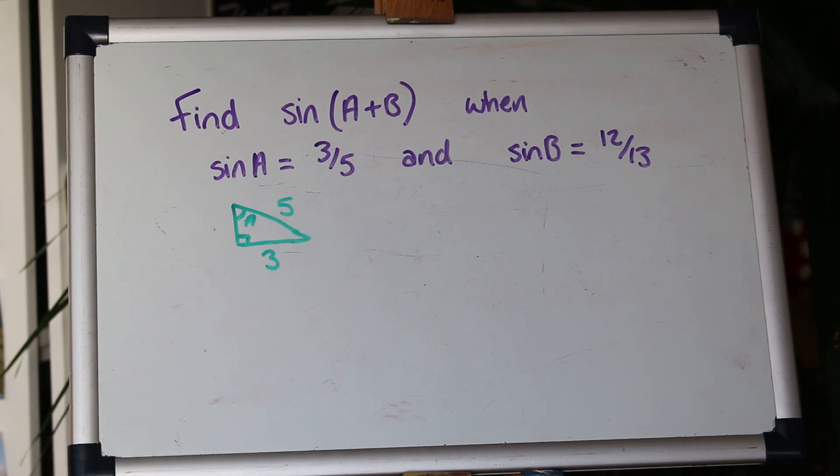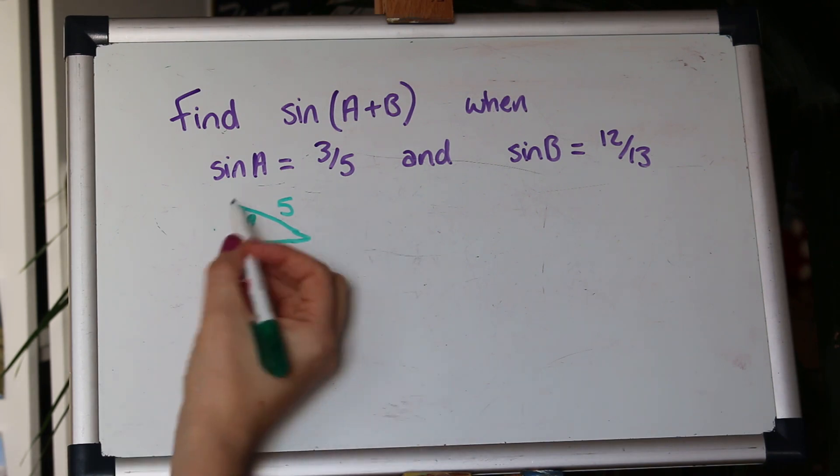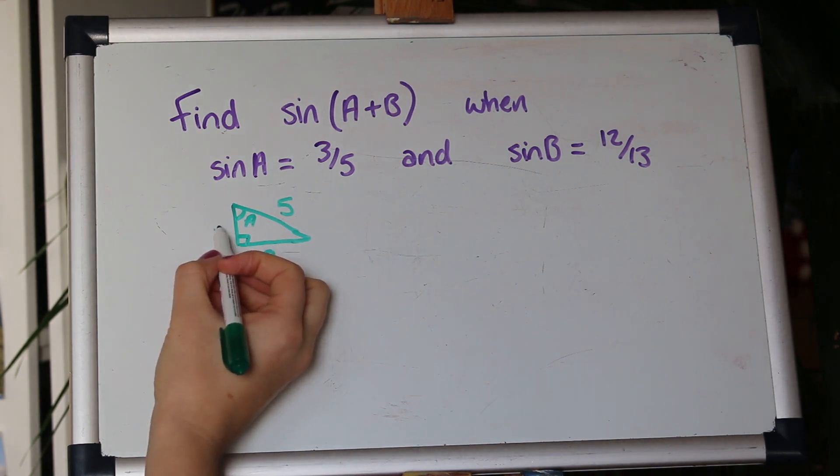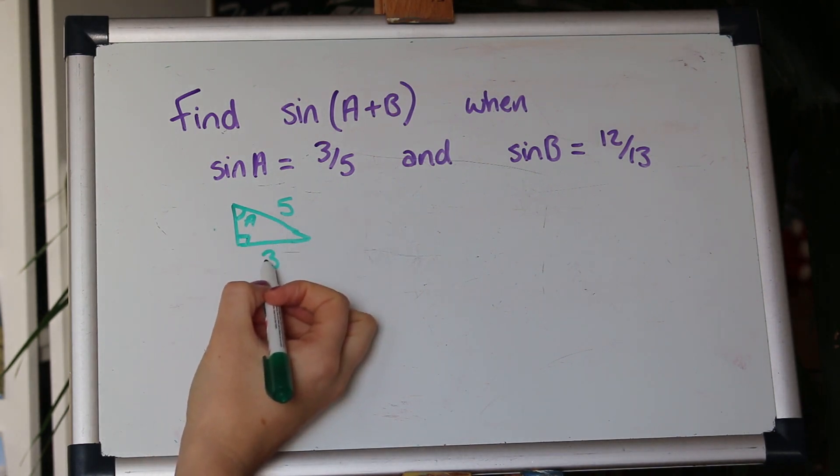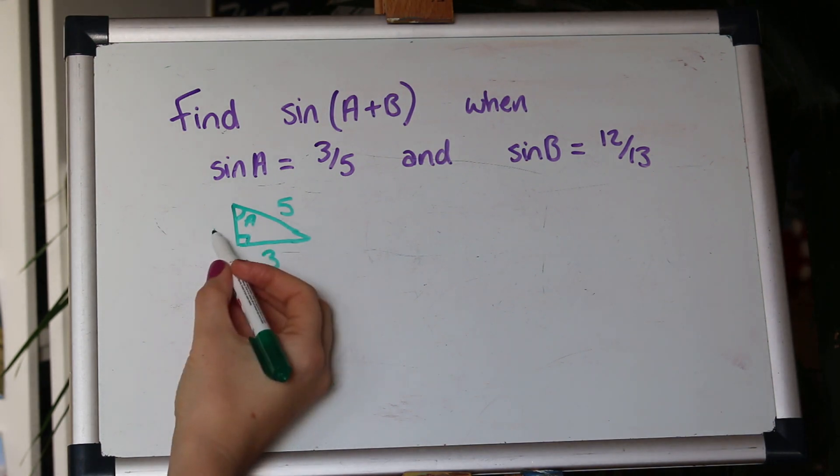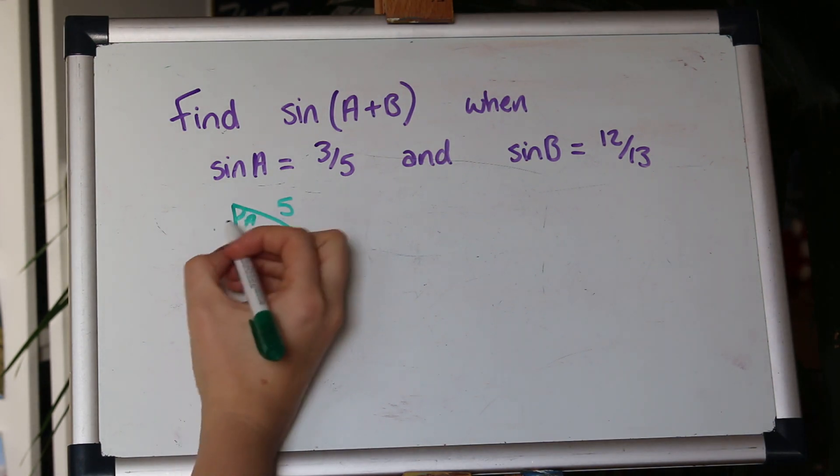Now to get the last side we can use Pythagoras. So this side here will be 5 squared take away 3 squared which is 25 take away 9 and that leaves us with 16 and the square root of 16 is 4.